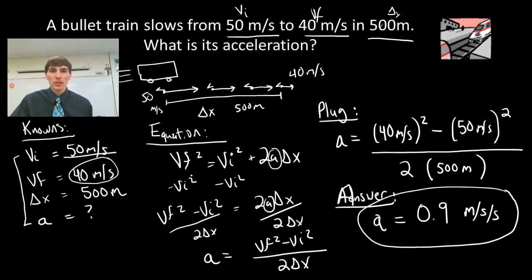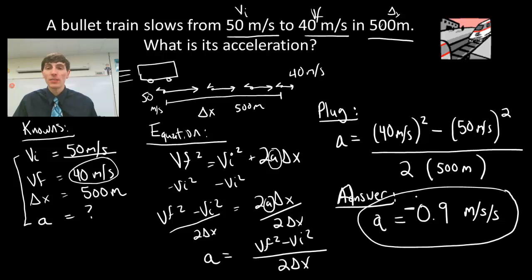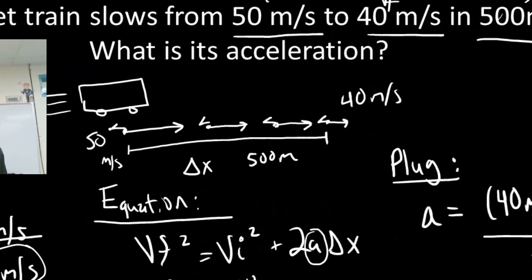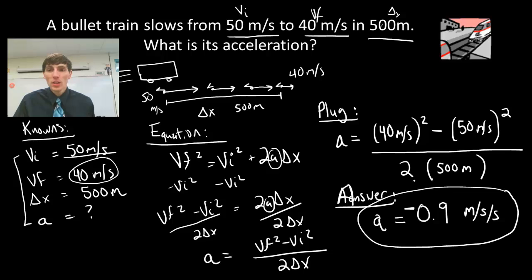You can arrange these steps horizontally if you'd like. Be very careful with signs — the sign of this acceleration is actually negative, because looking back at the acceleration vectors, the velocity is decreasing numerically. So 40 squared minus 50 squared is definitely a negative number, giving us negative 0.9 meters per second squared. Now I'm going to do one more example problem.